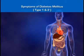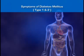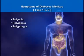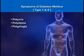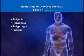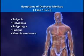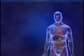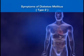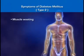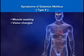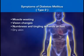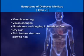Symptoms of type 1 and type 2 diabetes mellitus include the three P's: polyuria, polydipsia, and polyphagia, which is excessive hunger. Other symptoms include fatigue, muscle weakness, and poor blood flow, which leads to further fatigue. Type 2 diabetics may also present with other non-specific symptoms including muscle wasting, vision changes such as blurring, numbness and tingling in hands or feet, dry skin, and skin lesions that are slow to heal.